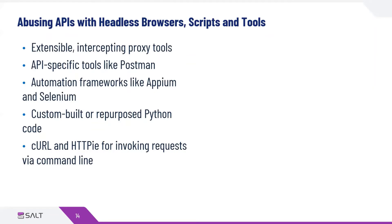Maybe you're in QA and you're working with Selenium automation frameworks or Appium. Or maybe you prefer to write code directly to exercise APIs, which is certainly possible. In the world of security, it might be more common to find Python scripts to invoke APIs. There are also many tools or libraries you can include to call APIs, such as curl or HTTPy, to invoke requests from the command line.